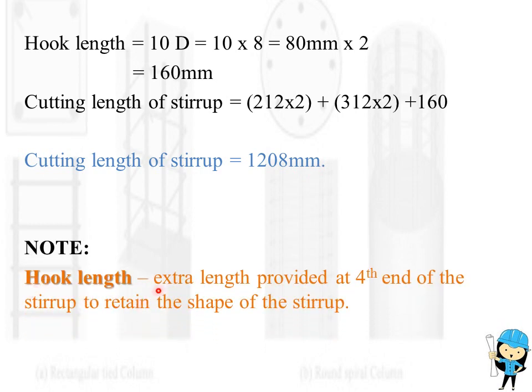What is hook length? Hook length is the extra length provided at the fourth end of the stirrup to retain the shape of the stirrup.